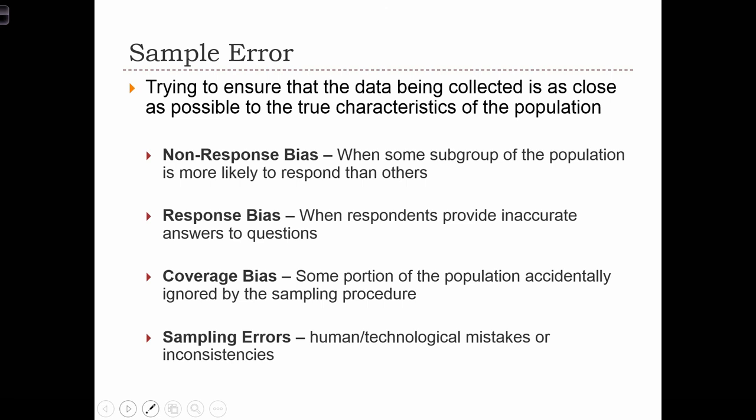Response bias exists when respondents provide inaccurate answers to questions. For example, when surveying a population about sensitive issues — perhaps about sexual preference or feelings of racism — people are sometimes going to lie on the survey, saying they're not gay or that they're not racist when in fact they are. These are examples of response bias.